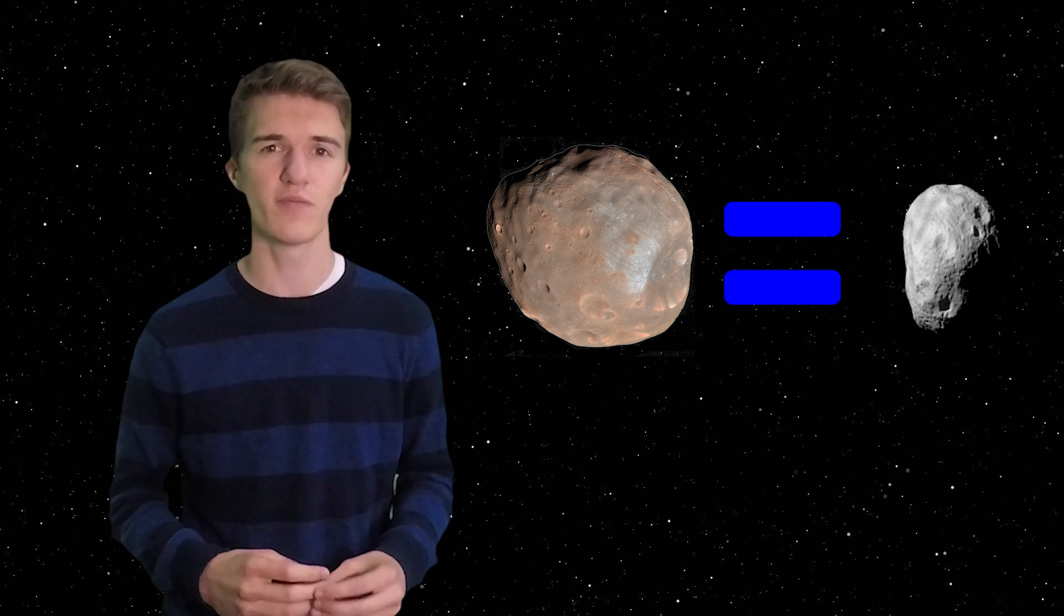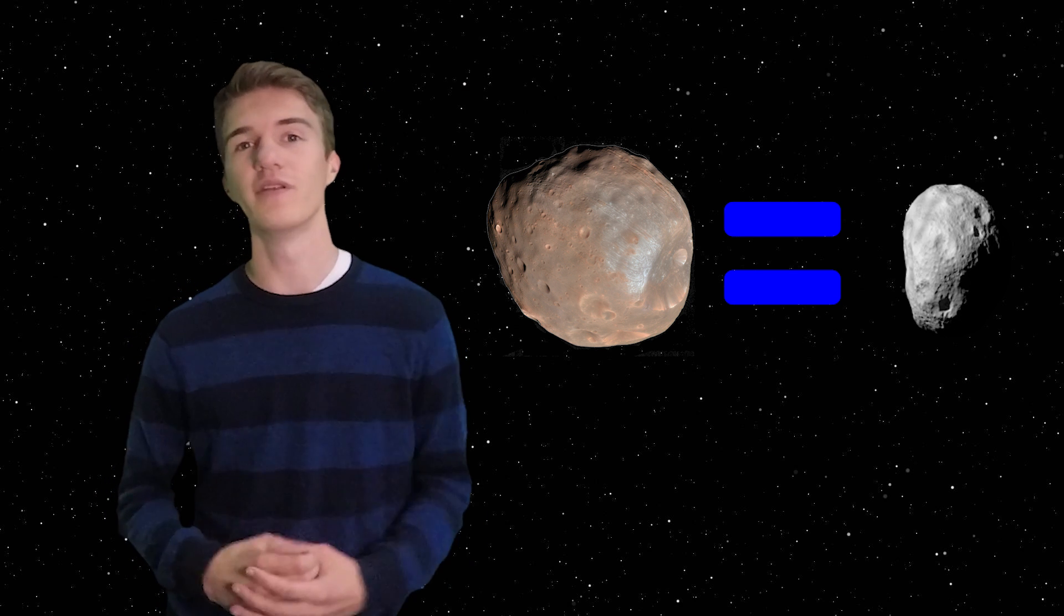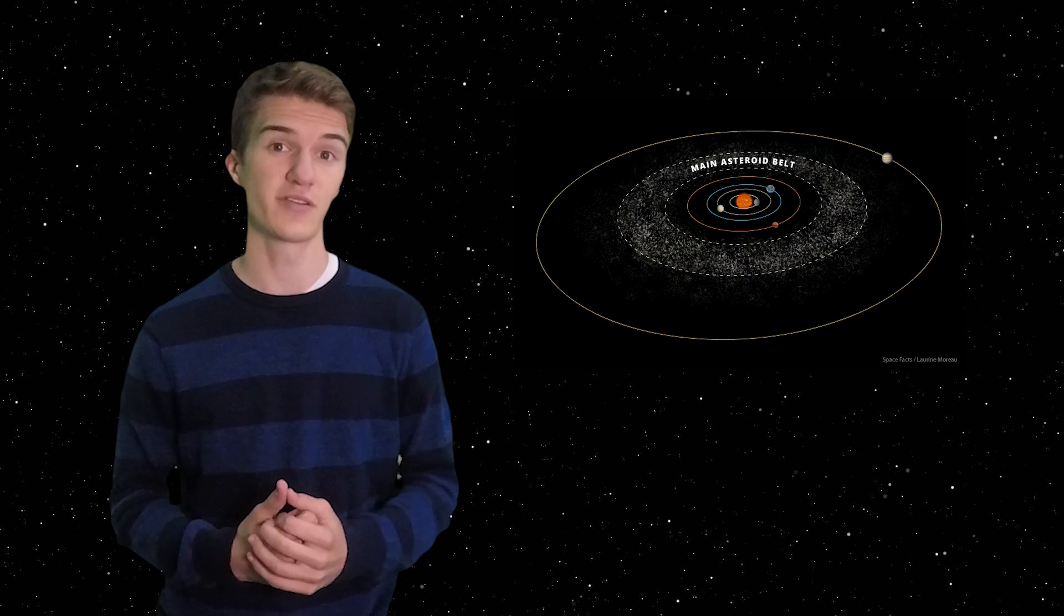However, if it turns out the compositions of the moons are more like asteroids that we find in the asteroid belt, it would probably be certain that Mars just picked them up from the asteroid belt.